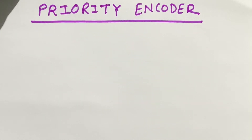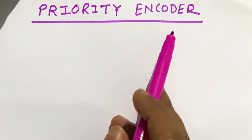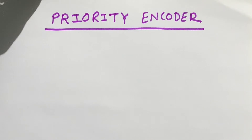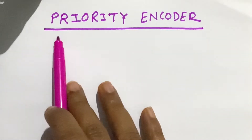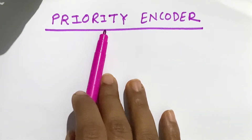Hey everyone, welcome to the channel. In today's video we will learn about priority encoder. Before that, I will request you to go through my 4-to-2 and 8-to-3 encoder video, that will help you to understand priority encoder. Priority basically means to prefer something or someone upon others.